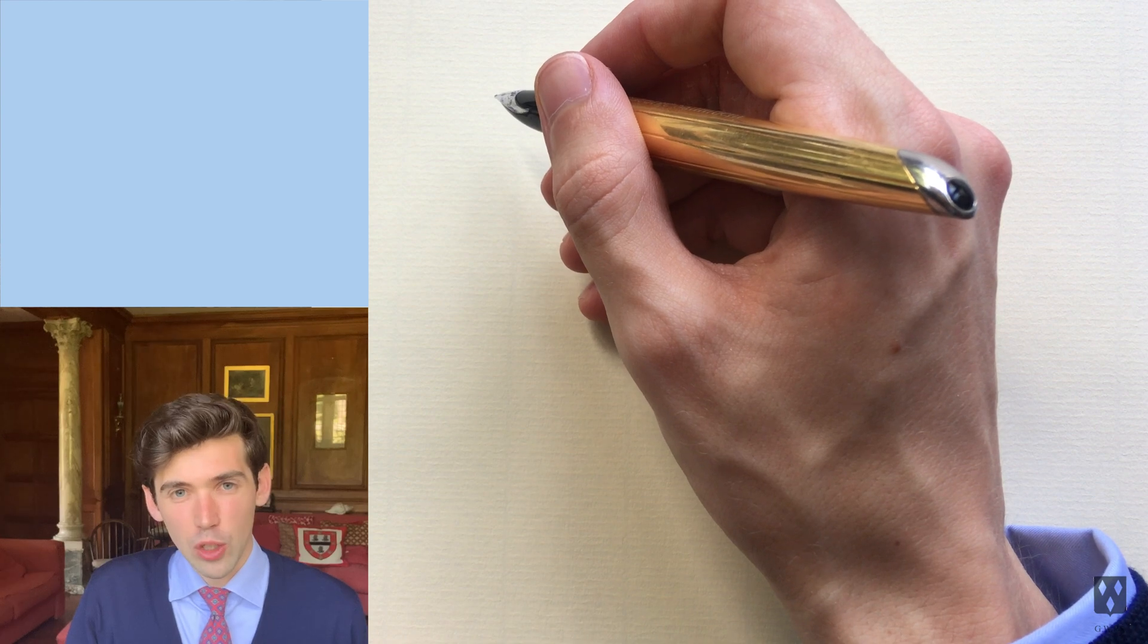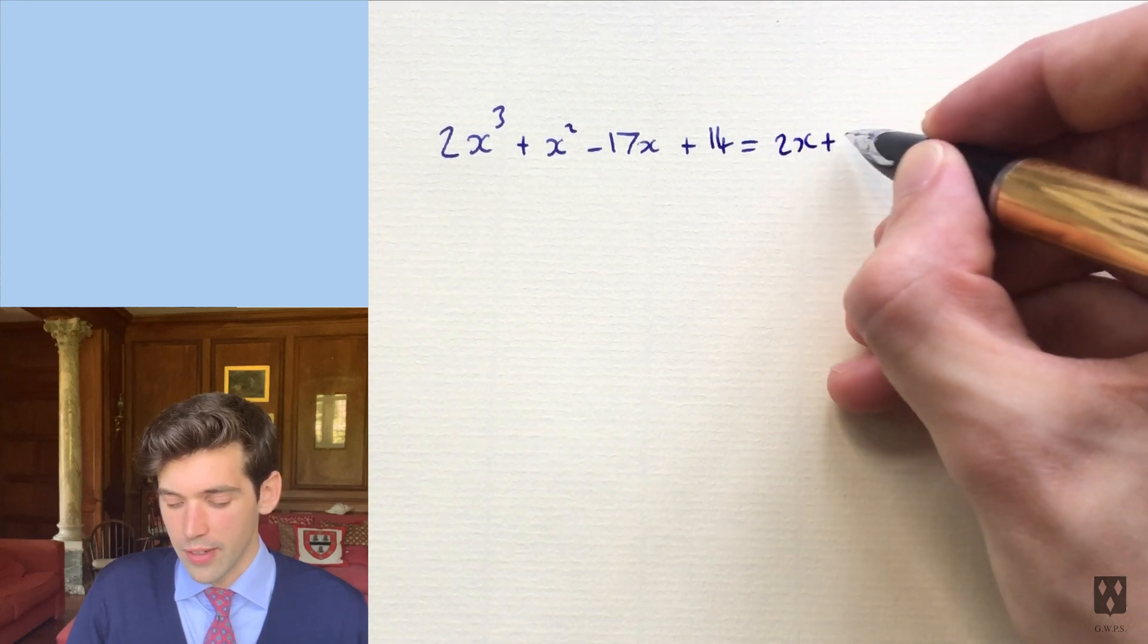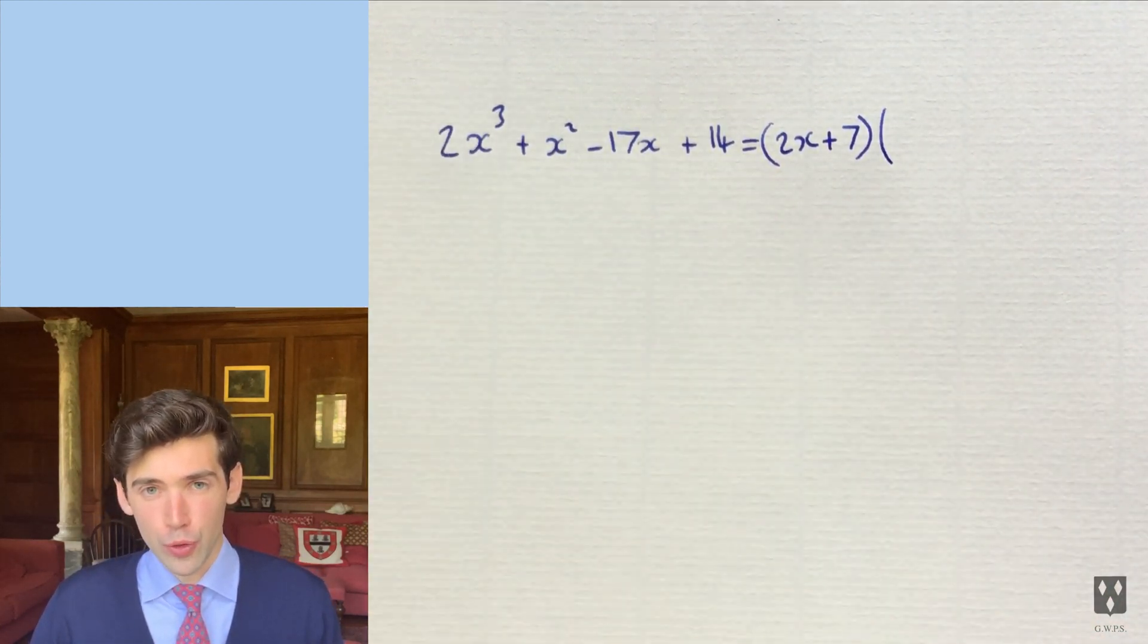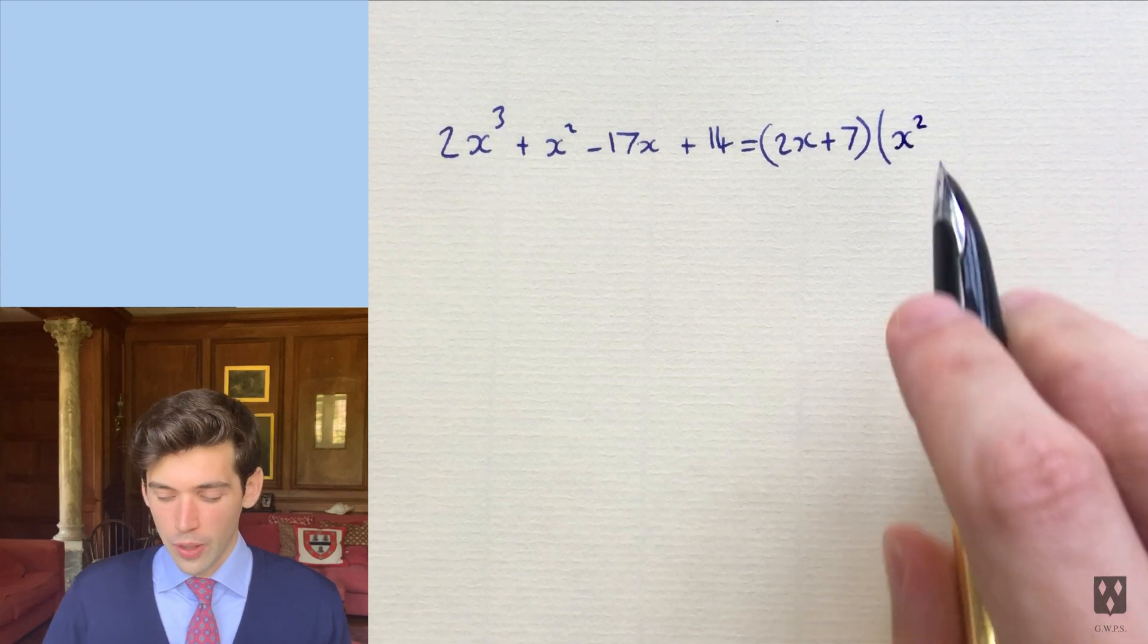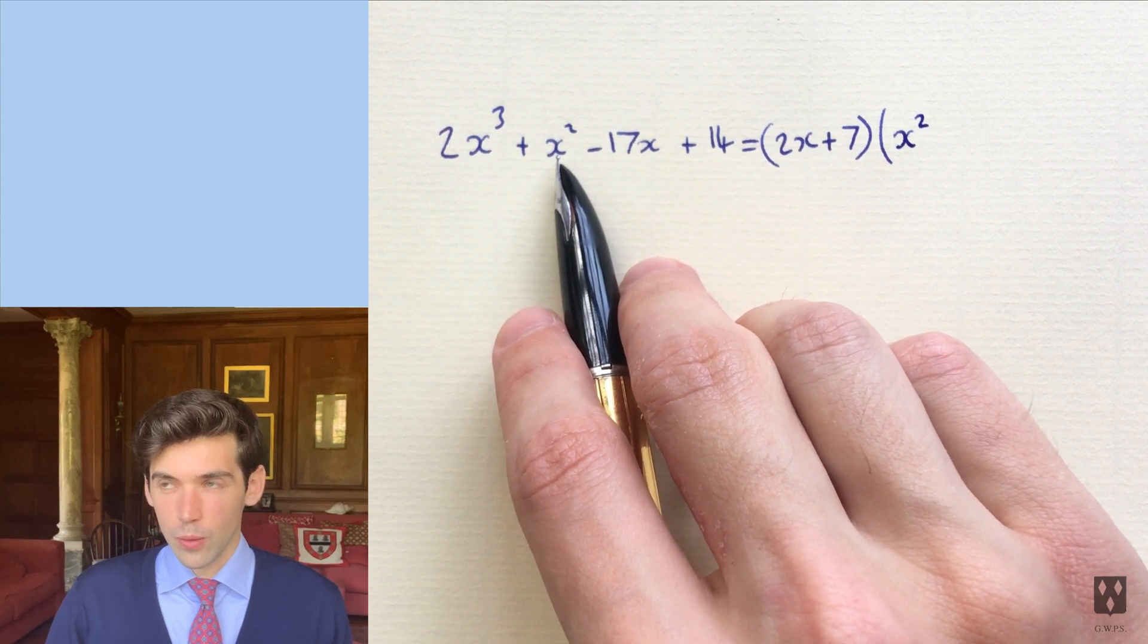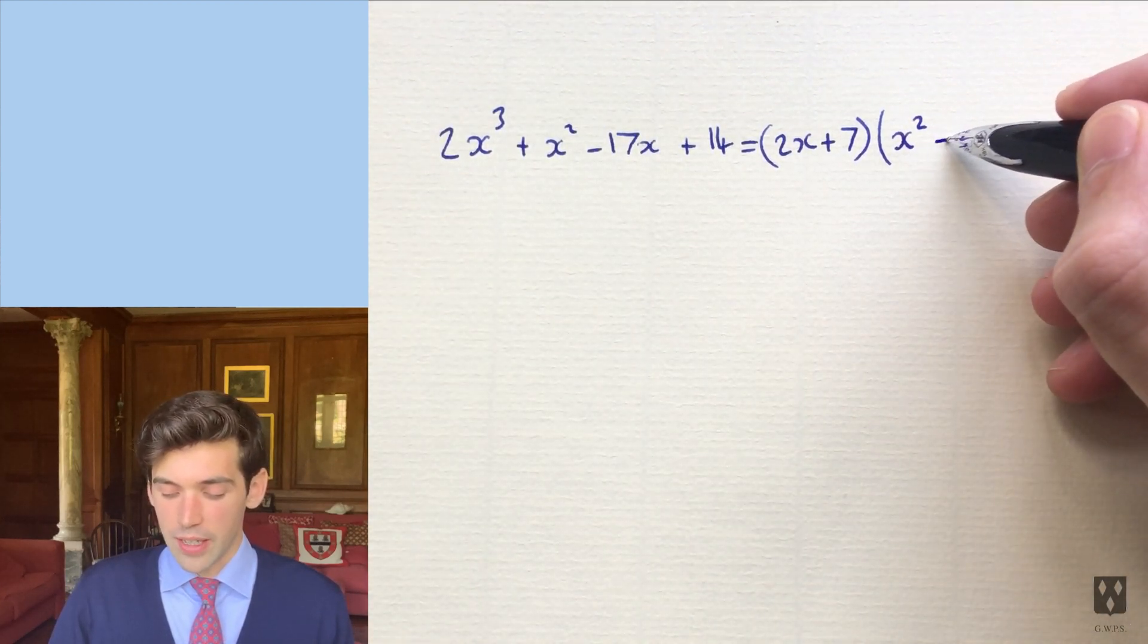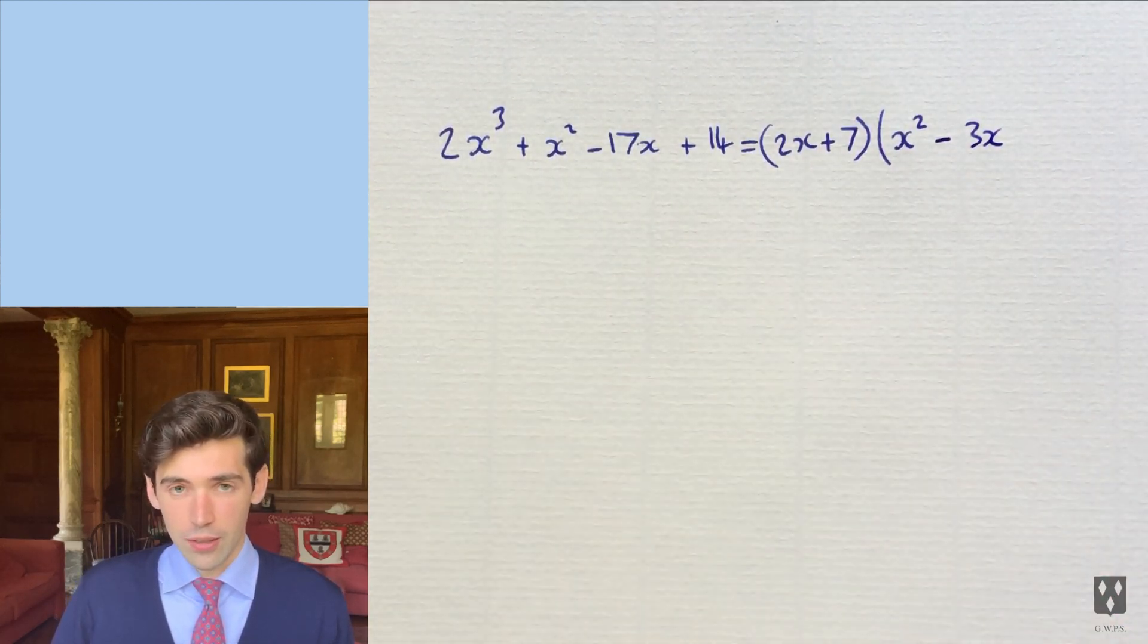So an example of one that's a little bit harder might be one like this. And you're given that 2x plus 7 is a factor. Okay, so we've got 2x here, and we want to make that into 2x cubed. And we do that by multiplying by x squared. And then you think, right, 7x squared, x squared. We want x squared, not 7x squared. So we need to put minus 3x, because that will multiply by 2x to give us the right difference that we require.